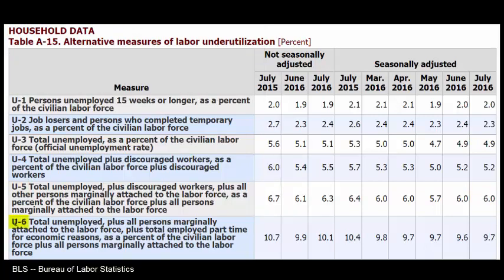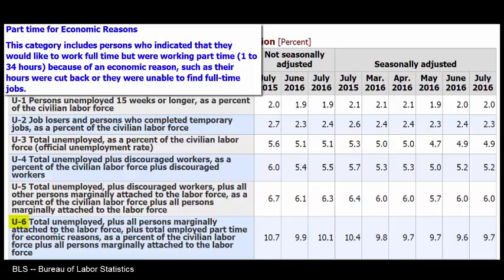U6 includes all of U5 plus total employed part-time for economic reasons. Part-time for economic reasons means these are persons who indicated they would like to work full-time but were working part-time — 1 to 34 hours — because of an economic reason, such as their hours were cut back or they were unable to find full-time jobs. In July 2015 it was 10.7%, down to 9.7% in July 2016.